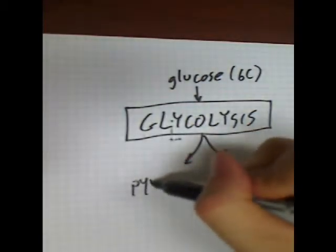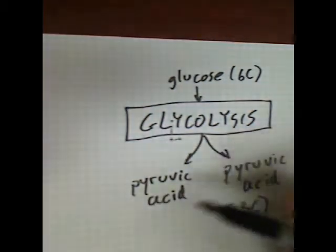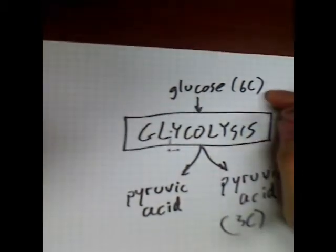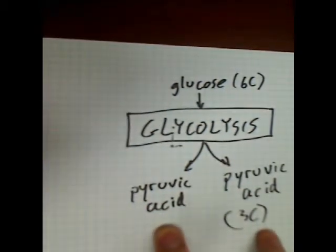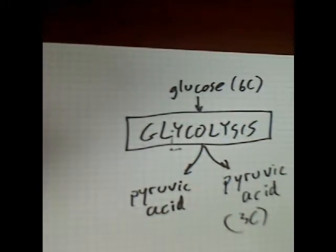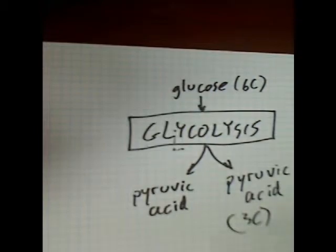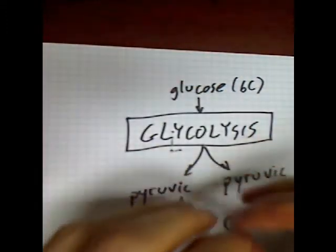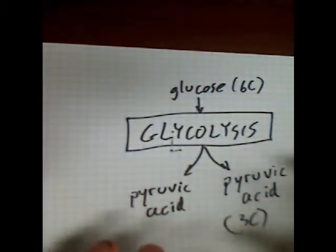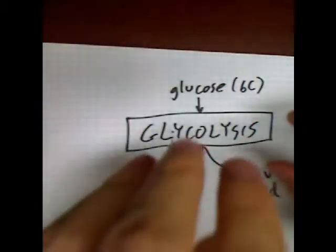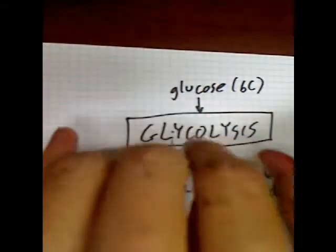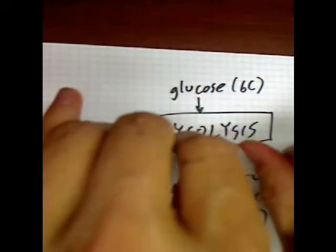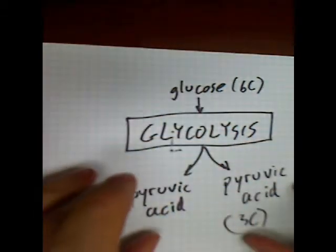There are two of these pyruvic acid molecules. We started with something with six carbons and ended up with two molecules that have three carbons each. If you're doing the carbon bookkeeping — and I encourage you to always keep carbon bookkeeping in mind, because it's a really useful way of keeping all this stuff straight — you'll notice we took something with six carbons, broke it into two things with three carbons, and we haven't lost or gained any carbons. Everything is accounted for. It's like we took something and broke it in half — we broke one of those carbon-carbon bonds and ended up with two things that have three carbons.